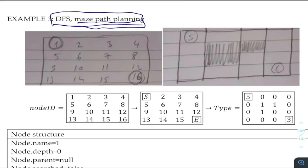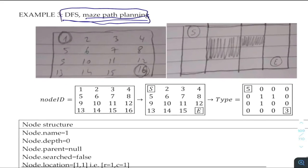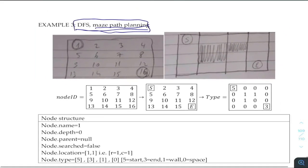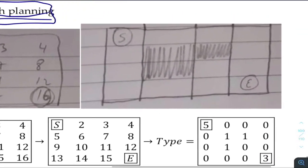We are on our path to solving a path generation problem. Given a maze structure or labyrinth structure, you first need to express your maze — for example, you can draw it on a piece of paper. Mark S for start and E for the end, which is the point where we like to reach, where we like to generate the path to.